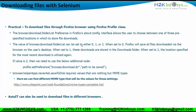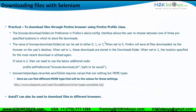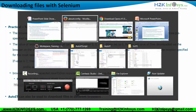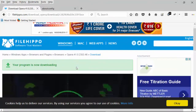If we use value 2, the location specified for the most recent download is utilized. When using value 2 for this preference, we need an extra line of code: profile.setPreference("browser.download.dir", path) — where path is the location where you want to save the file.